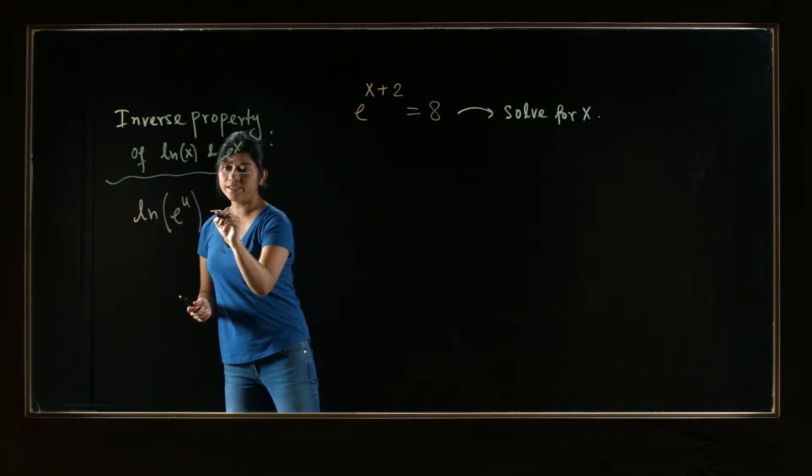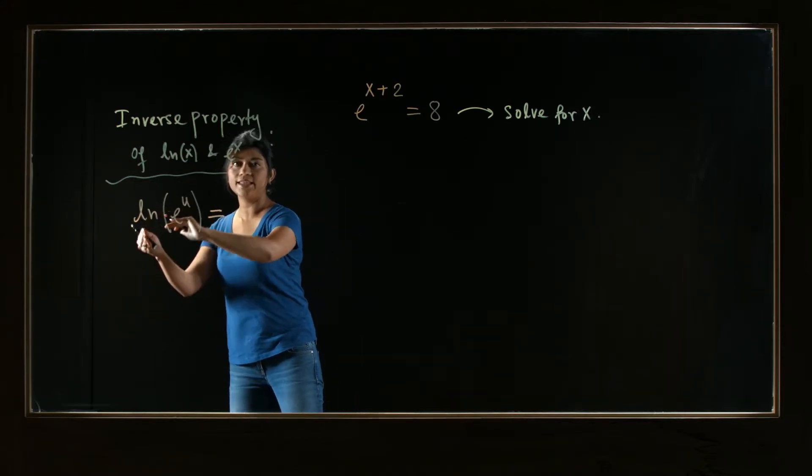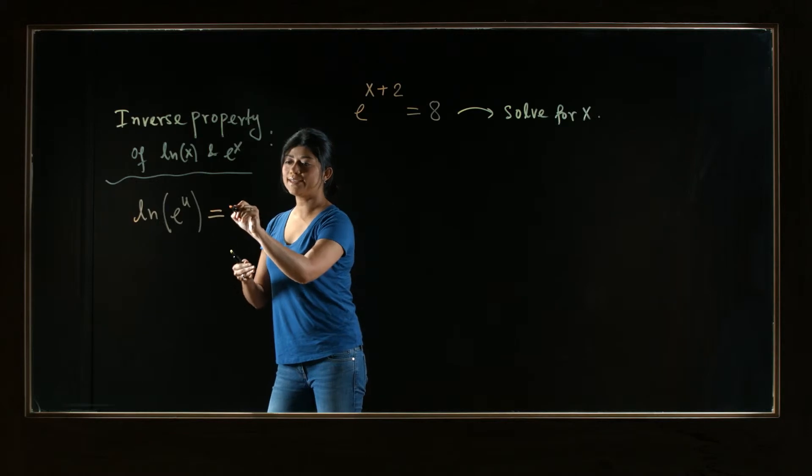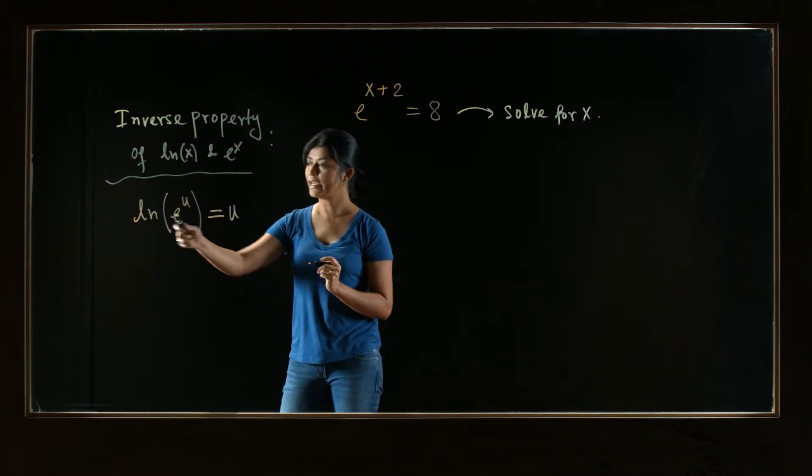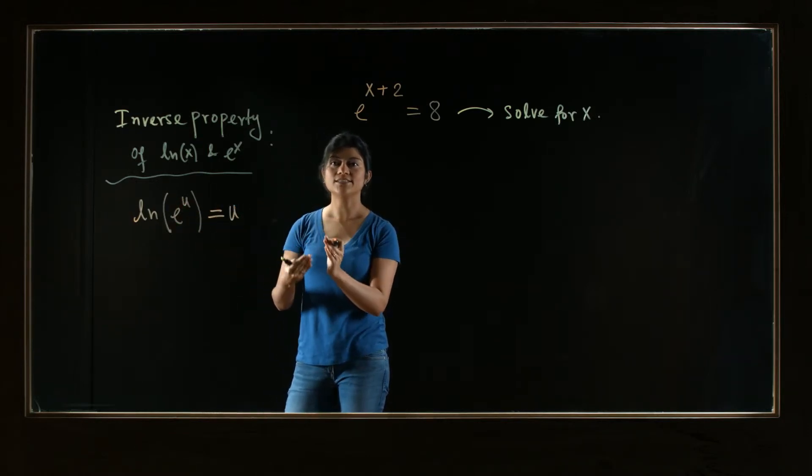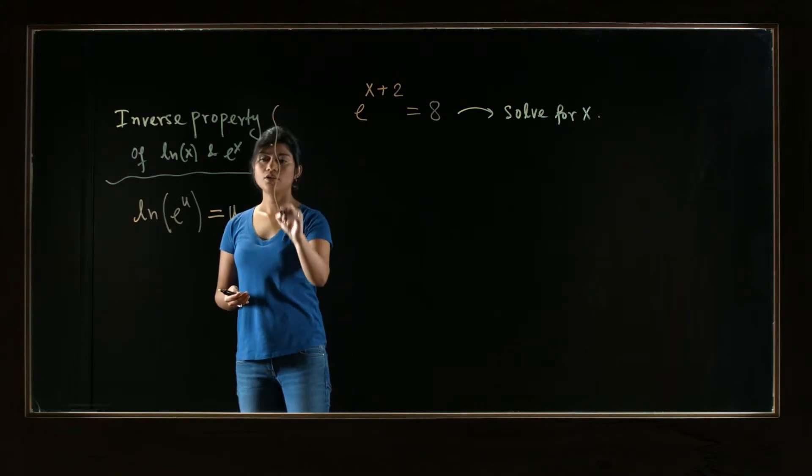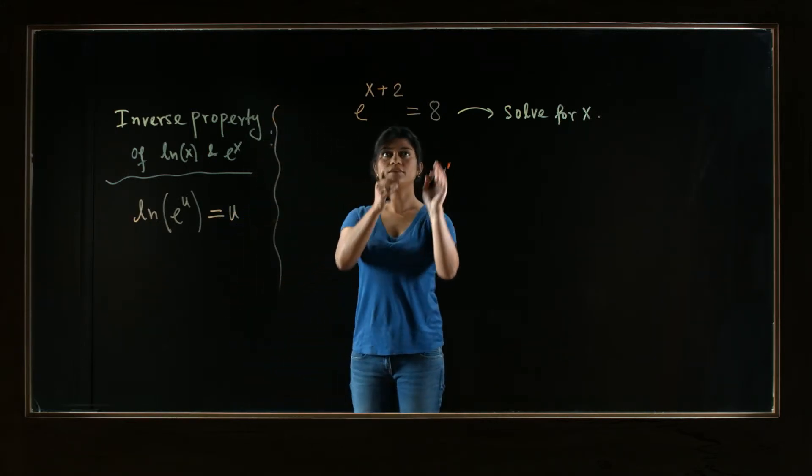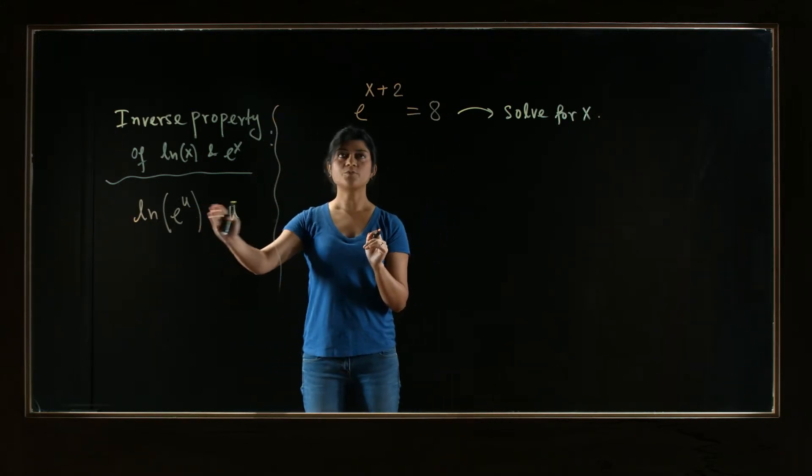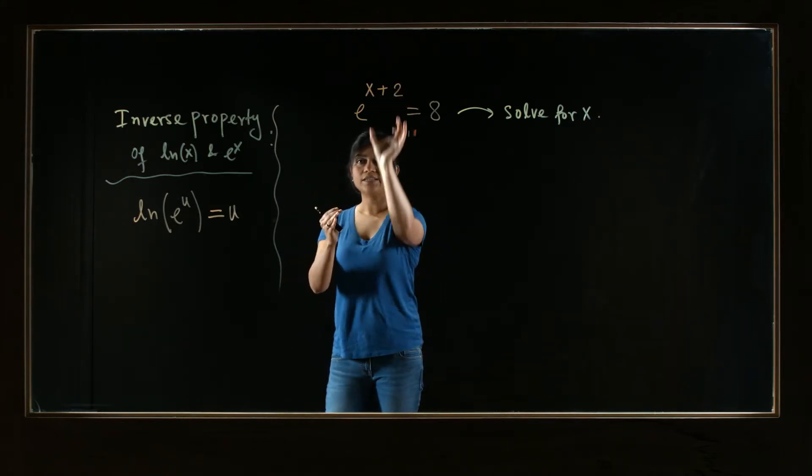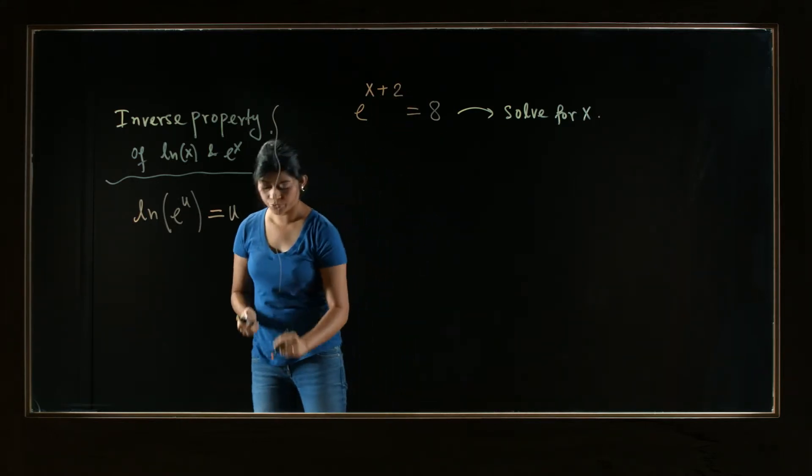And by canceling, I mean that whenever you're applying ln of e to the u, your final answer is just that u. So the ln and e almost cancel each other. So come back here, and we can use this property right here to bring our x down from the exponent. That's what we're going to do.